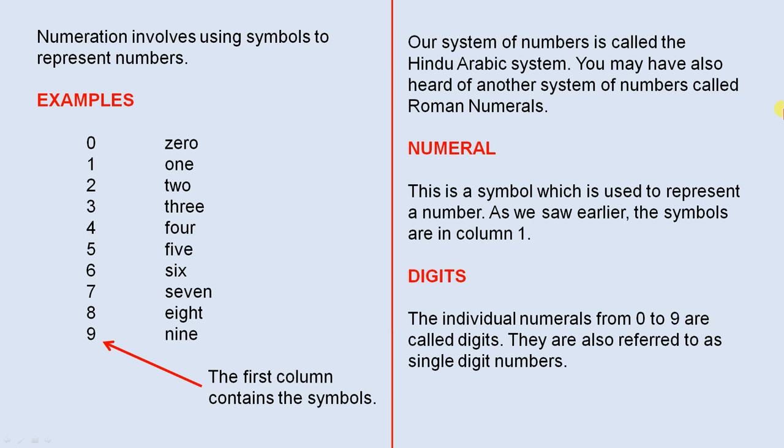Numeration involves using symbols to represent numbers. For example, here are some examples: we have 0, 1, 2, 3, 4, 5, 6, 7, 8, and 9.